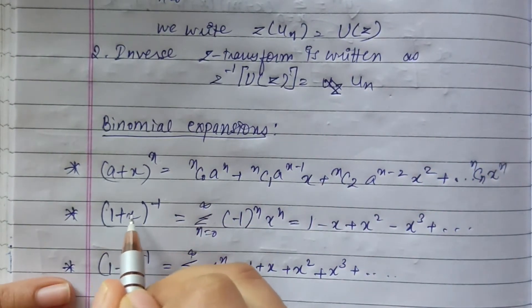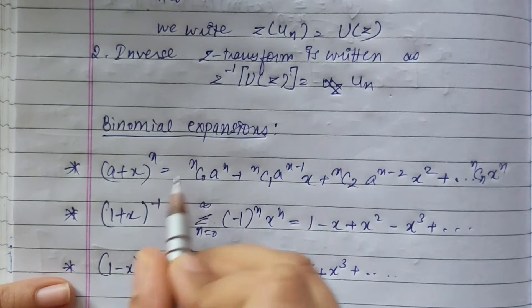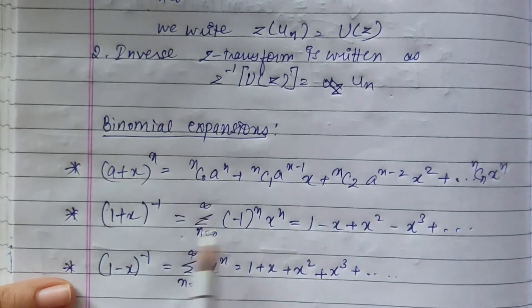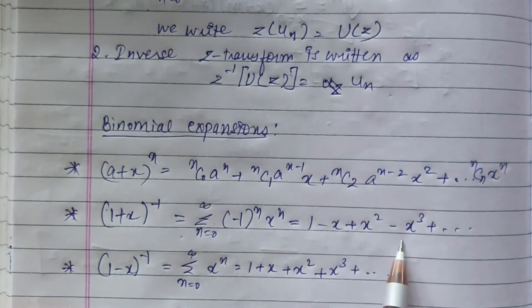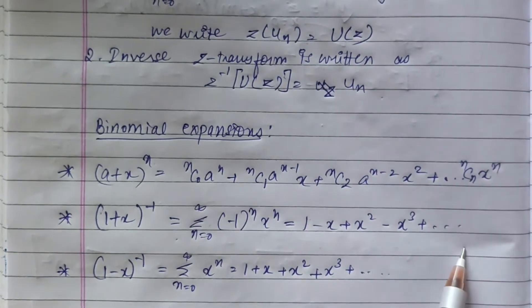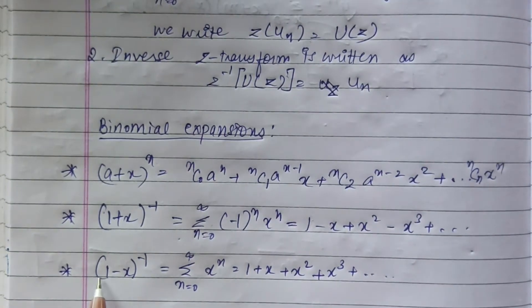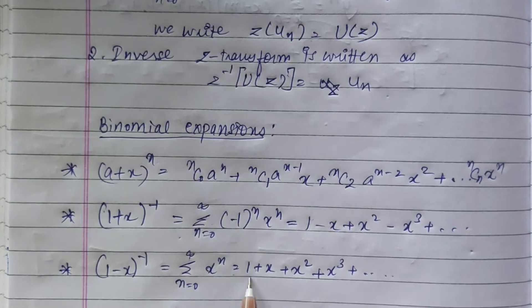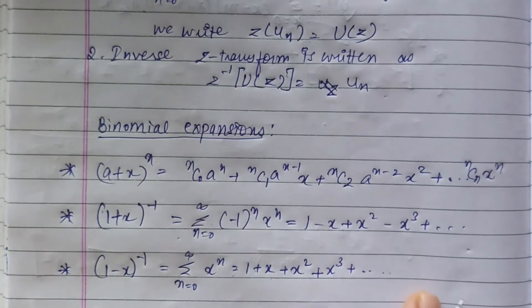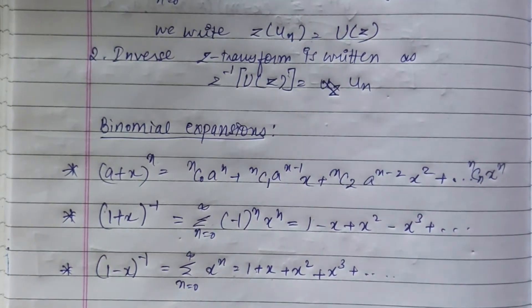Then we have (1 + x)^(-1) = 1 - x + x^2 - x^3 and so on. And (1 - x)^(-1) = summation from n=0 to infinity of x^n = 1 + x + x^2 + x^3 and so forth.